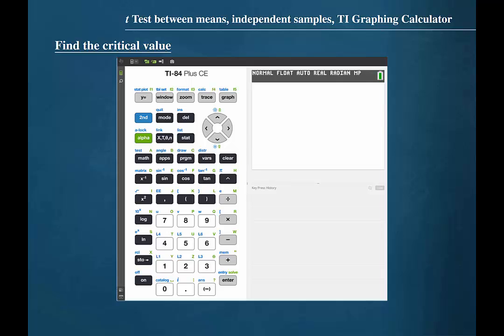Using the TI graphing calculator to find the critical value, we will press 2nd VARS. We will be using the inverse t function, so we should press 4. This is a one-tailed test, so at the prompt for the area, we will input the level of significance. That was 0.05. The number of degrees of freedom is 19. Cursor down to paste and press enter.